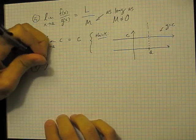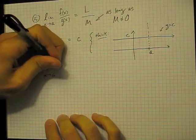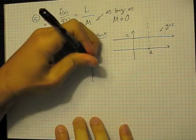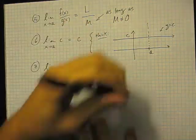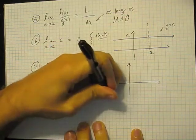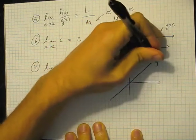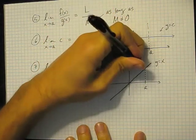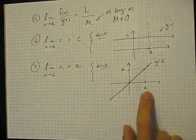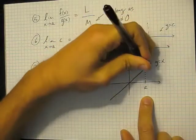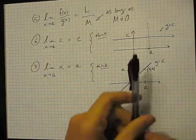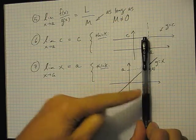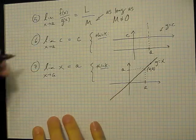This next rule is very important. If you ask what is the limit of the function x as x goes to a, the answer is a. The graph y equals x looks like a 45-degree line. If we look at the trend of this graph as x approaches a, the coordinates are (a, a). So when you're near a on the x-axis, the function is also near a. That's just common sense.